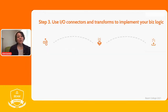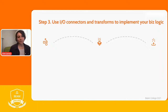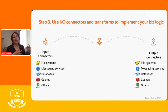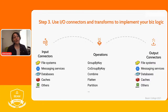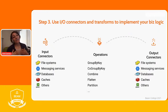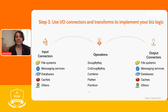The third step is to use any of the available I/O connectors or transformations to build your business logic and take advantage of all the raw data you are collecting, creating smart business insights to grow your value proposition. The I/O connector ecosystem can read and write data from file systems, messaging services, databases, caches, and other sources. In terms of transformations, there is an ecosystem of built-in PTransforms — including GroupByKey, CoGroupByKey, combining data from different sources, and flattening data sources.